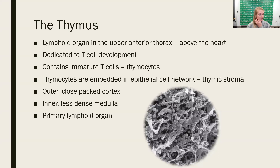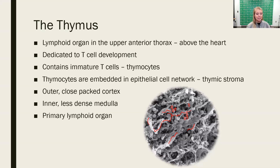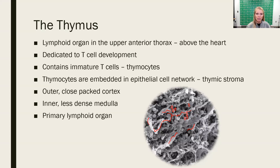Looking at a schematic, you can see all of these epithelial cells that create the structure, with thymocytes embedded within them. The structure is created by the thymic epithelial cells, and the thymocytes reside in any open space. There is an outer cortex, which is more tightly packed with thymocytes and epithelial cells. Closer to the center — the medulla — it loosens up and becomes less dense, and you have more myeloid dendritic cells rather than epithelial cells.